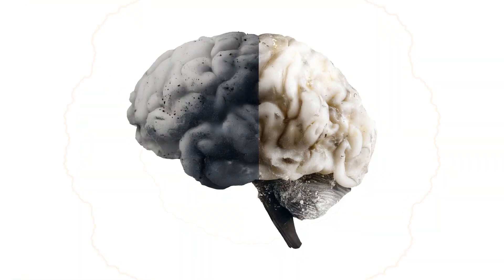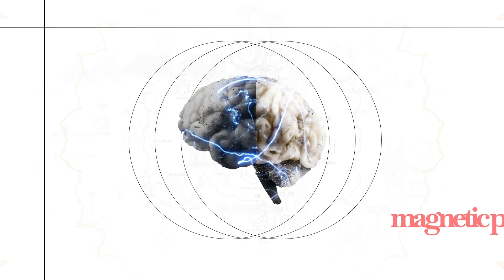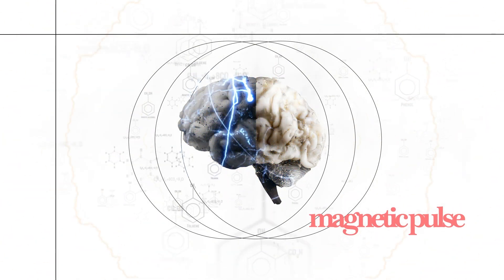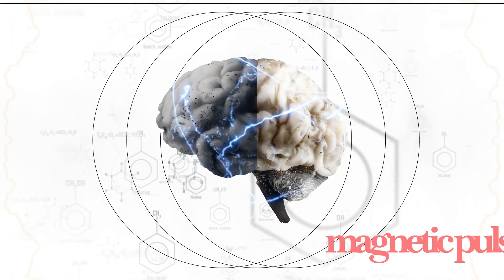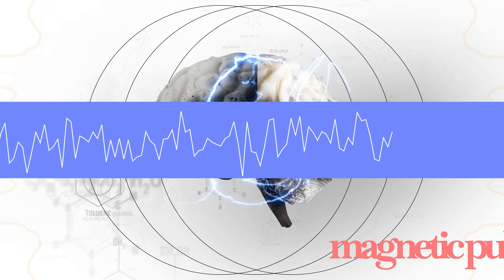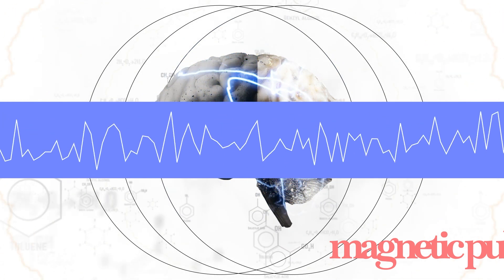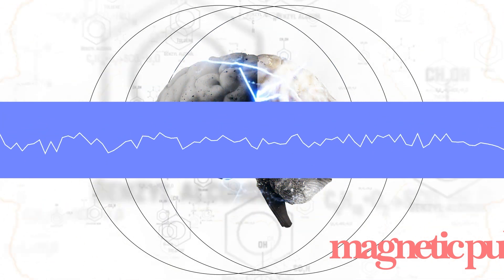To test this, researchers zap the brain with a magnetic pulse and record the ripple with EEG. Then they compress the signal, like zipping a file on your computer. If the signal compresses easily, the brain is quiet.